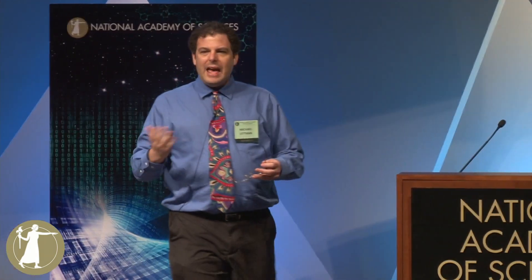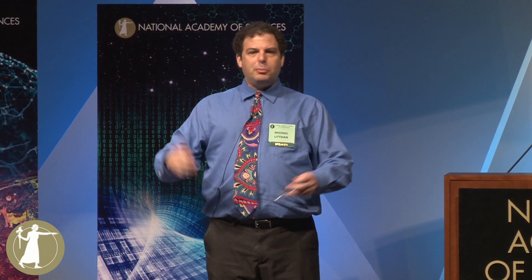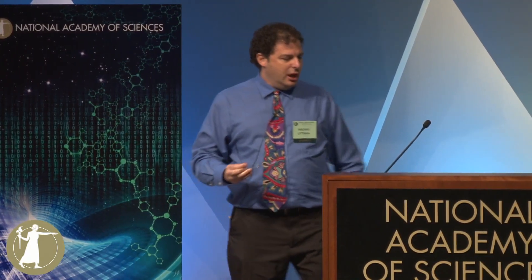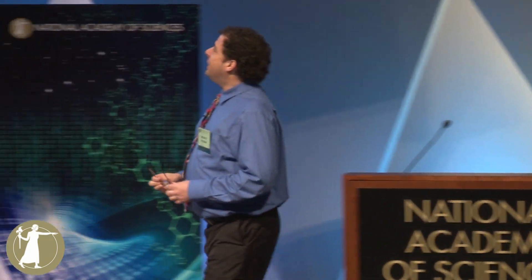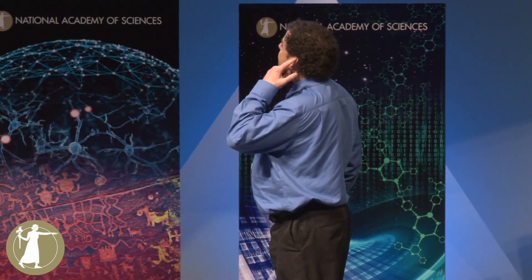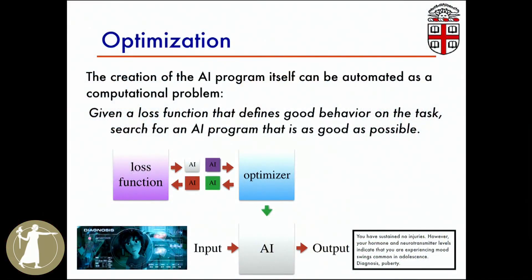That raises the question: where did that mapping come from? As Peter said, it could come from programmers sitting down and writing down the rules — maybe interviewing expert diagnosticians to find good rules for mapping inputs to outputs. But that's hard. Maybe we can think of the creation of these AI programs as itself a computational problem — a problem that takes various kinds of inputs and produces outputs, where the output is the AI program that's going to run on the robot.